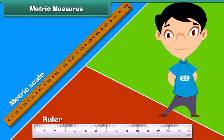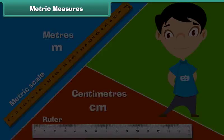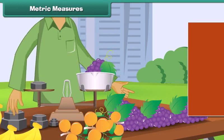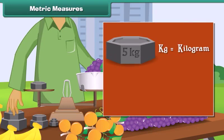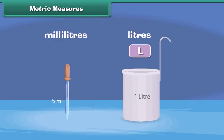Metric measures: Meter is represented by M and centimeter by CM. The weight of an object is measured in grams and kilograms. The symbol KG represents kilogram while the symbol G represents gram. Capacity is measured in liters and milliliters. L represents liter and ML represents milliliter.